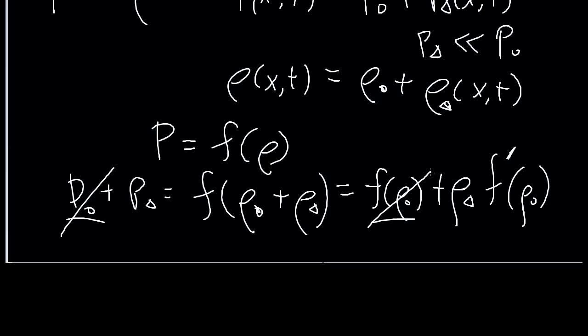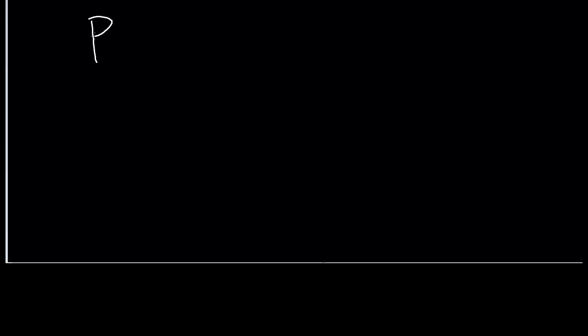And of course, this part is the same as this part because that's just the background density giving you the background pressure. We end up with P_delta, the change in pressure, is equal to the derivative at rho naught times rho delta. And notice this doesn't depend on x or t, so it's just a constant.